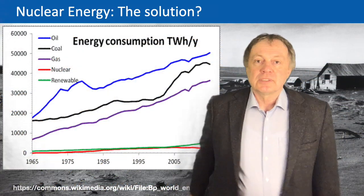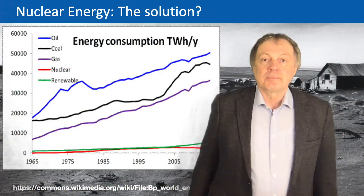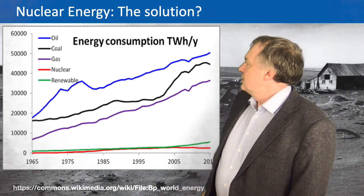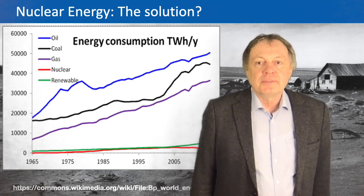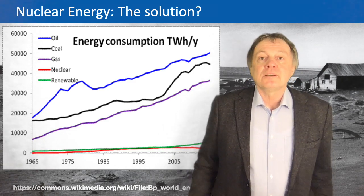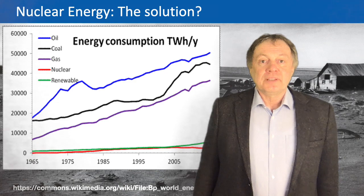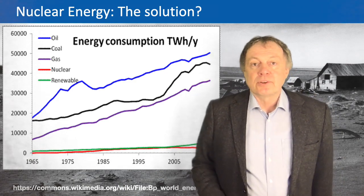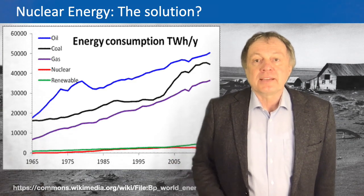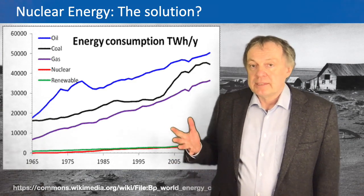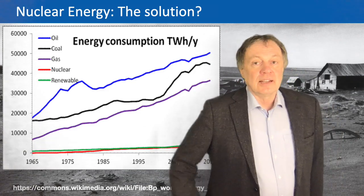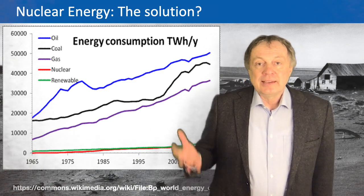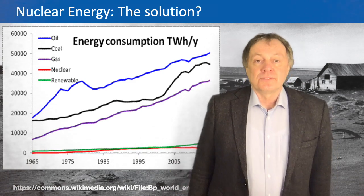If you look at my first diagram here, you see the energy consumption as I showed you already in my last lecture. This time it is plotted from 1965 to 2015, so exactly 50 years. The upper curve is oil, then you have coal and then you have gas. You see that especially the gas had a linear trend in the last 50 years, and there has been a large increase of fossil fuels.